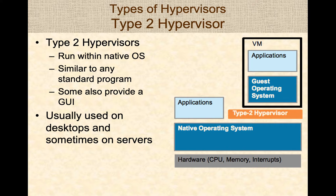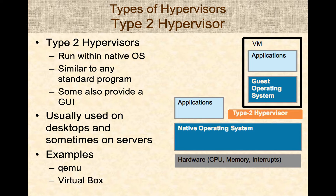These types of hypervisors are usually used on desktops, though sometimes also on servers. Some examples include QEMU — we'll do a deeper dive into QEMU soon — and also VirtualBox from Oracle, which is a very popular Type 2 Hypervisor.